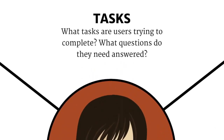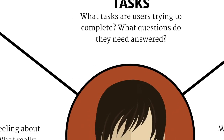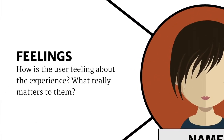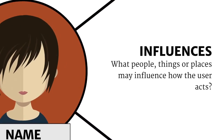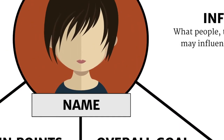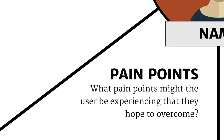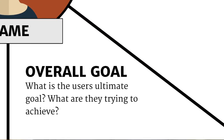In the end I started adapting the empathy map for my specific needs and circumstances. Instead of those previous six segments I went with the following: Tasks — what tasks is the user trying to complete and what questions do they need answered? Feelings — how is the user feeling about the experience, what matters to them? Influence — what people, things or places influence the user and how they act? Pain points — what pain points might the user be experiencing that they're hoping to overcome? Goals — what is the user's ultimate goal, what are they trying to achieve at the end of the day?